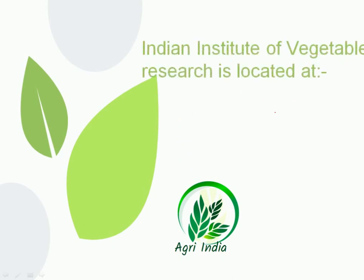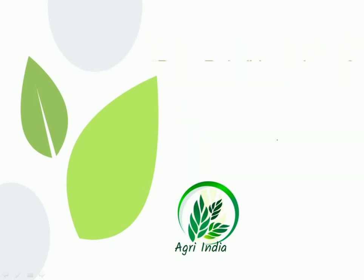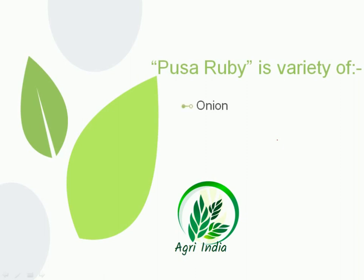Next question: Indian Institute of Vegetable Research is located at — options are Delhi, Lucknow, Srinagar, and Varanasi. Delhi is not correct. The Indian Institute of Vegetable Research is located at Varanasi, and the Indian Institute of Temperate Horticulture is located at Srinagar. The correct option is Varanasi.